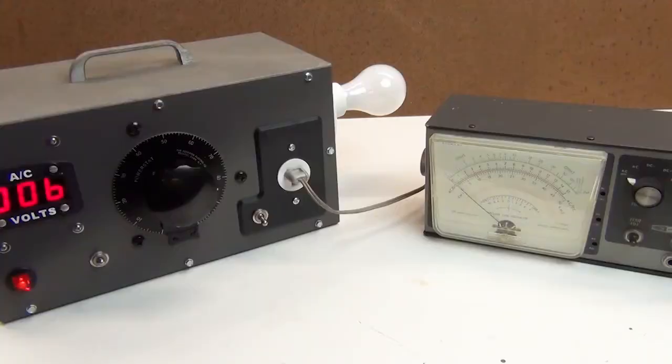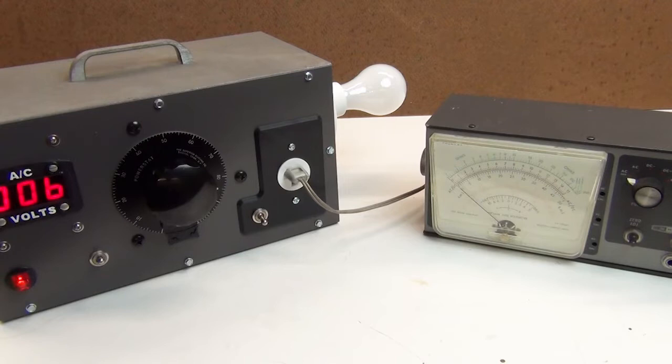The way it works is pretty simple. You plug the dim bulb tester into AC mains then plug your DUT into the dim bulb tester. Next you turn on the DUT and slowly crank up the AC voltage while watching the light bulb.